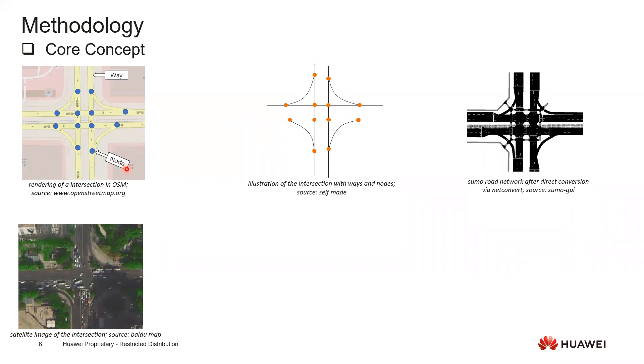So in OSM data, one intersection consists of multiple lanes, multiple curves, and also eight nodes. If we directly use NetConvert to generate - this is a pipeline for NetConvert - in the default settings it will convert the results like this. There are sub intersections inside it which will cause deadlocks or other behaviors if we put traffic here.